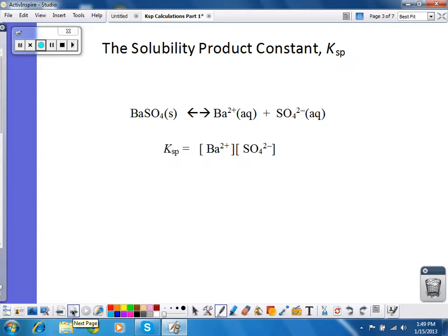So, for example, barium sulfate, we would predict, would be insoluble, but it will dissolve a very small amount. So, when it is in equilibrium, the Ksp expression for this equation would be the concentration of barium ion times the concentration of sulfate ion.